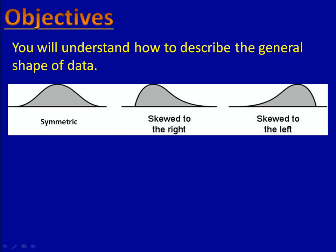Then we'll talk about how we can describe the shape of the graph. The graph can be described as symmetric, skewed to the right, or skewed to the left. This helps us to understand and make predictions.